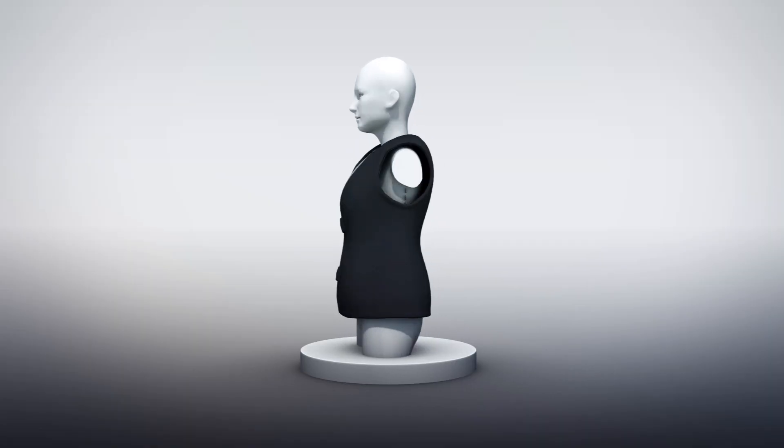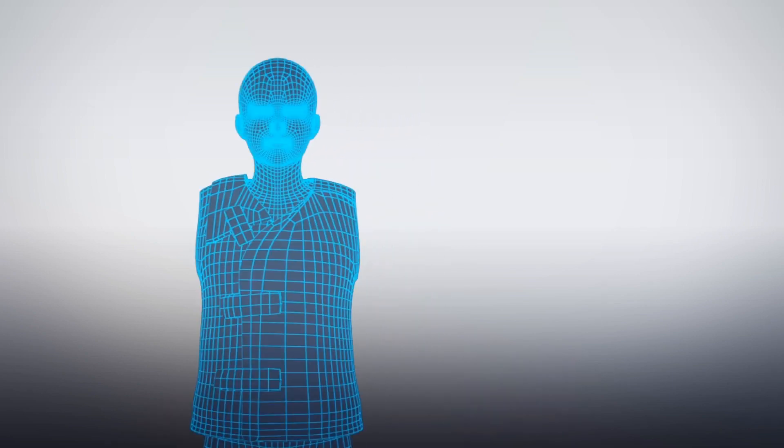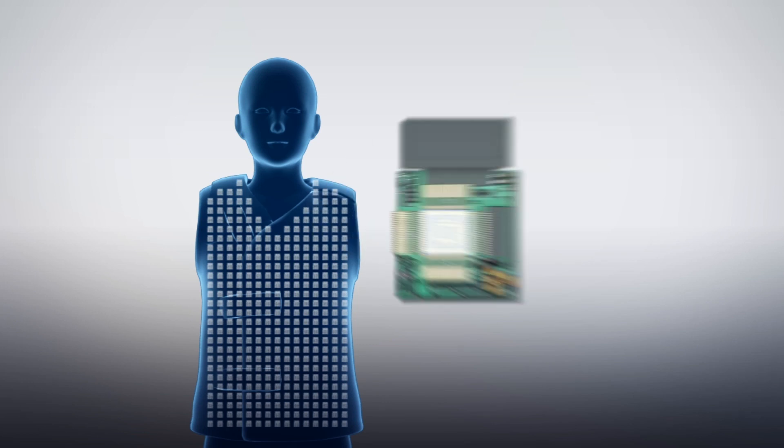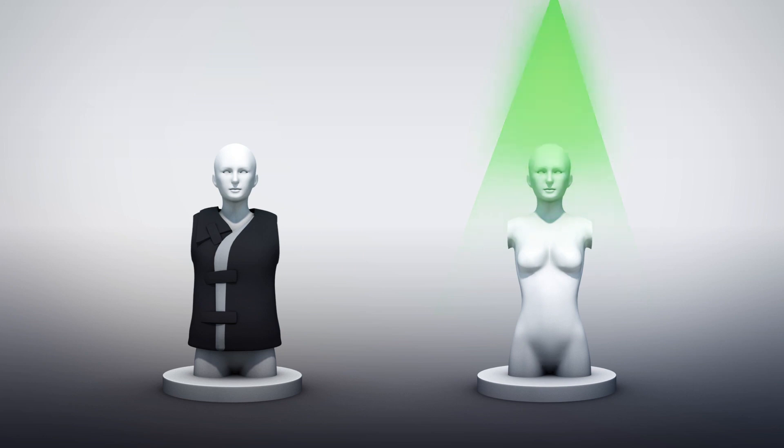According to the European Space Agency, the pair of phantom dummies named Zohar and Helga are fitted with over 5,600 radiation sensors. Zohar will wear the AstroRad protective vest and Helga will not, which will help researchers evaluate the effectiveness of the vest.